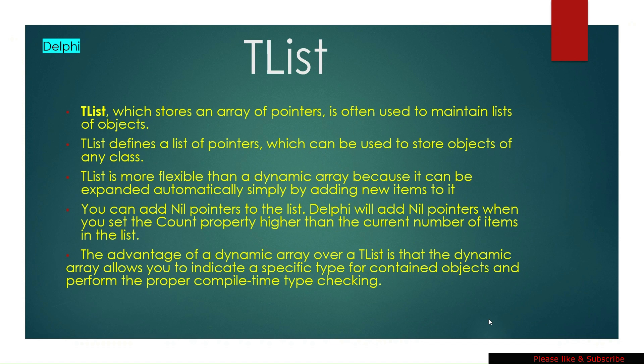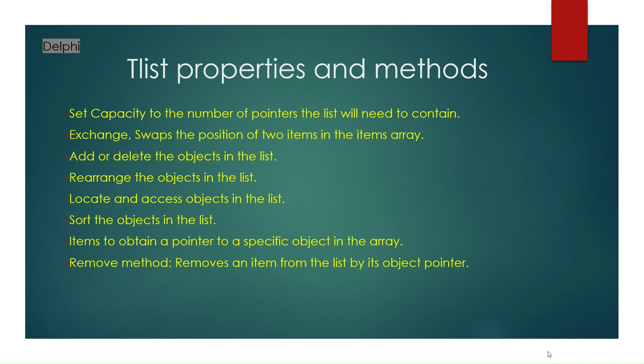You can also add a nil pointer to the TList. The advantage of TList over a dynamic array is that a dynamic array allows you to indicate a specific type of contained object and perform proper compile-time type checking.